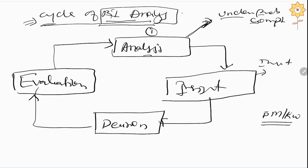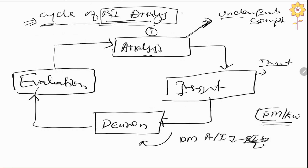Moving ahead to the third phase — once the problem has been understood properly, the decision phase begins. The decision maker applies all the data collected in the earlier phases, that is the analysis phase and insight phase, and using the BI software or BI system, tries to provide a decision.